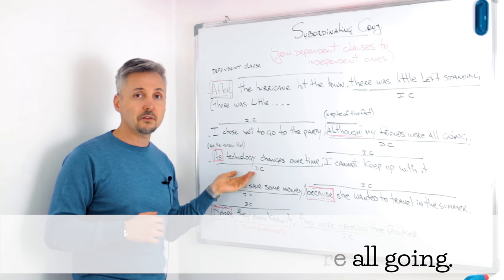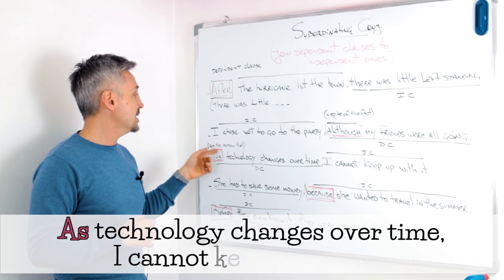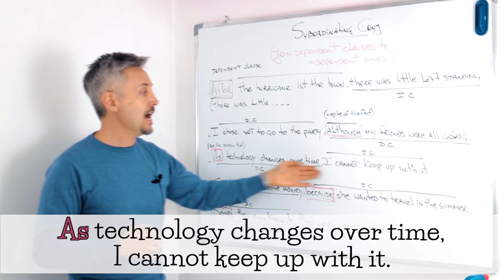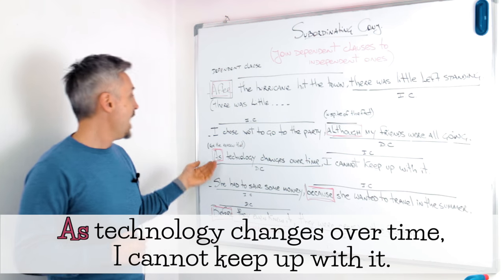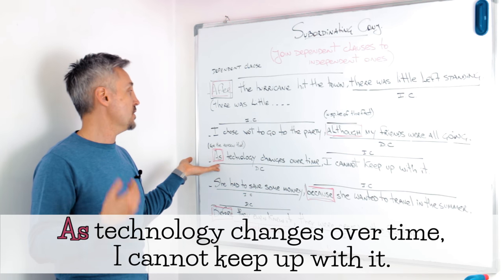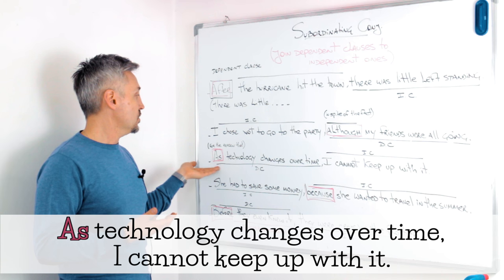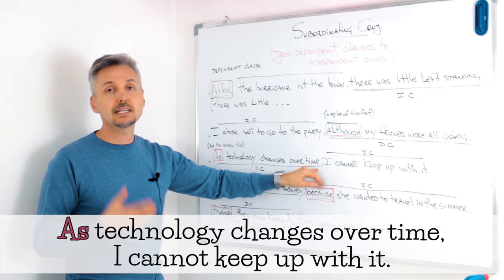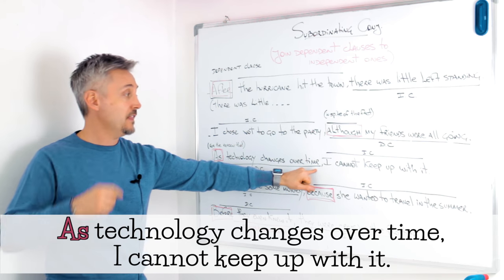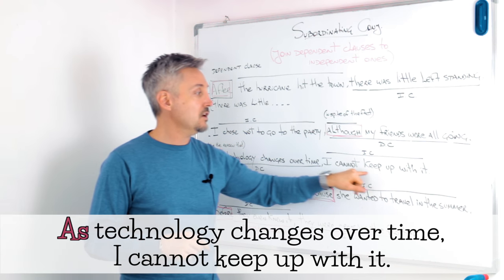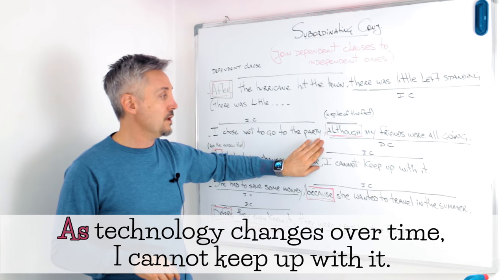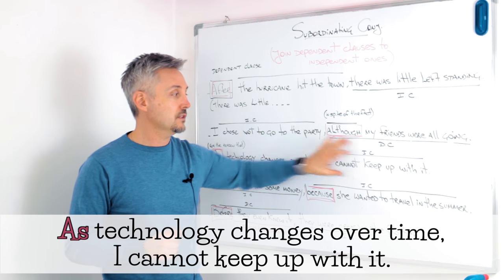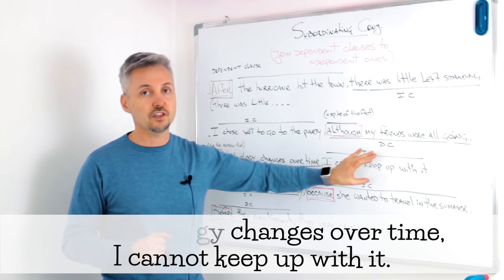The third example was: as technology changes over time, I cannot keep up with it. 'As,' in this case, means 'for the reason that.' So 'as technology changes over time' is the dependent clause, and 'I cannot keep up with it' is the independent clause. And obviously, we can change the order.